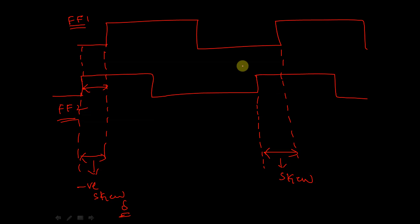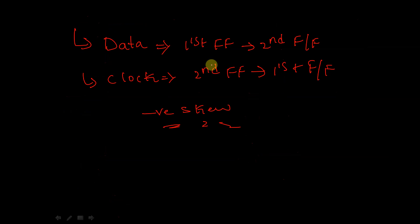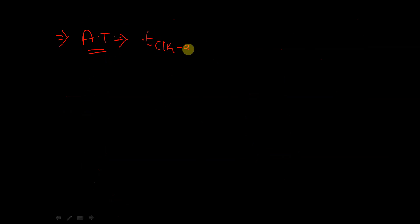The setup time for the second flip-flop is marked on the waveform, and the setup time for the first flip-flop is similarly marked. The arrival time — the time the data takes to reach the second flip-flop from the first flip-flop — is the same as in previous cases. There is no change in the circuit, so the arrival time is: T_clock-to-Q plus T_combinational.